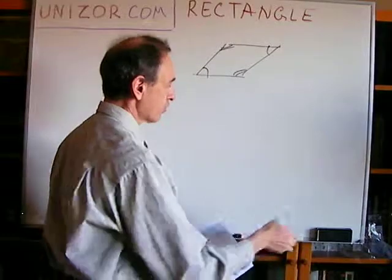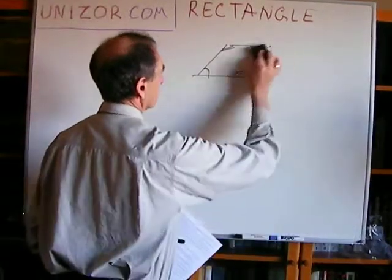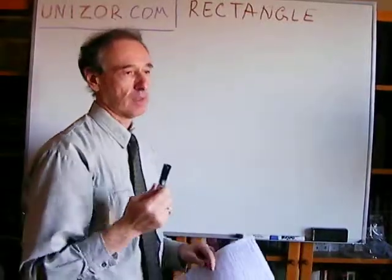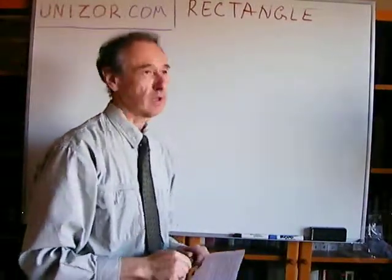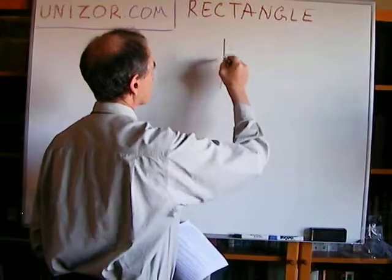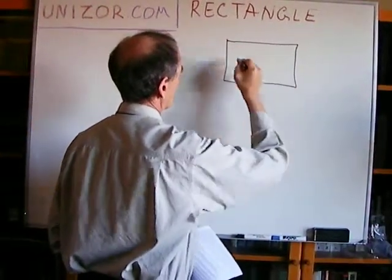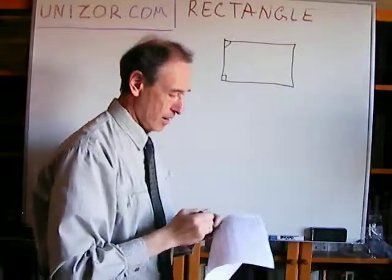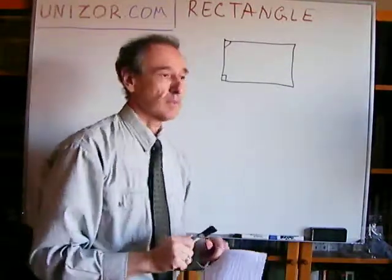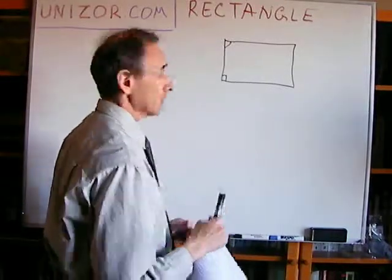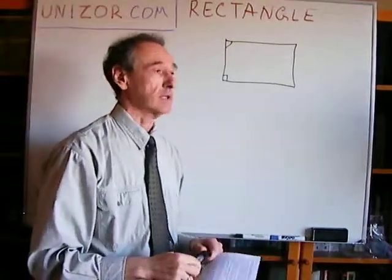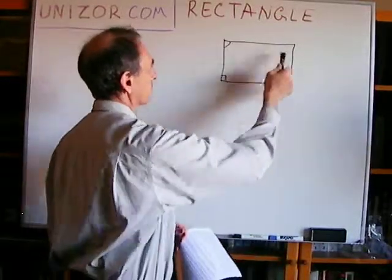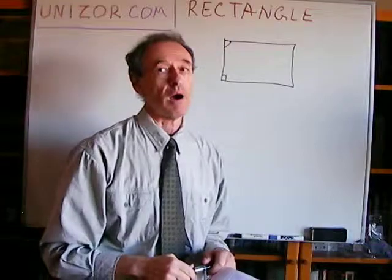Now, if we are talking about rectangle, then all four angles are supposed to be congruent to each other. And since these two angles in a parallelogram are supposed to be supplemental and equal to each other, they are supposed to be equal to 90 degrees, which means they're all right angles — all four of them.